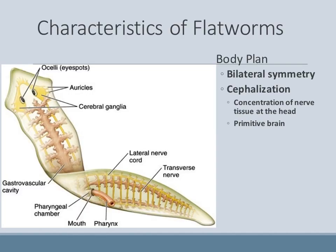Flatworms are, as they sound, flat worms, and they have bilateral symmetry. Flatworms do have cephalization, which means we're starting to see more specialized cells and tissues. In this case it's going to be nerve tissue at the head, and therefore flatworms are the first organism to really have a true primitive brain — a cluster of nerve tissues in the head region. The word 'ceph' means head.